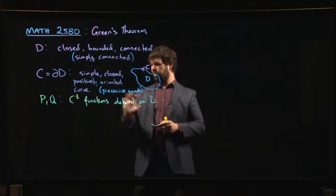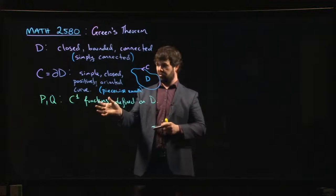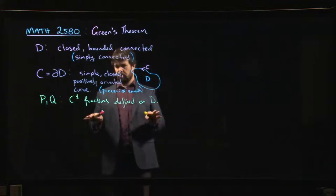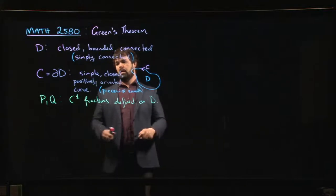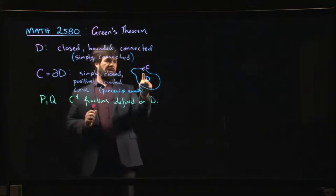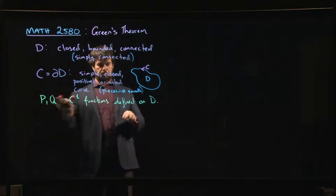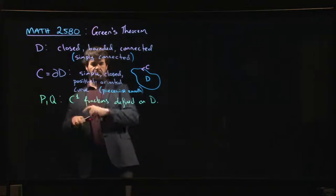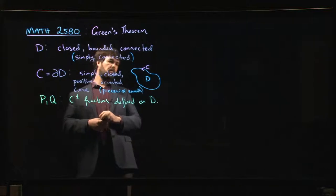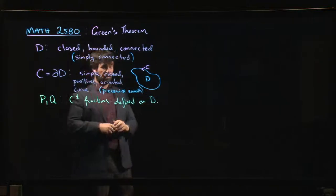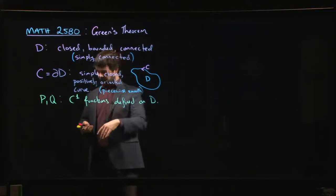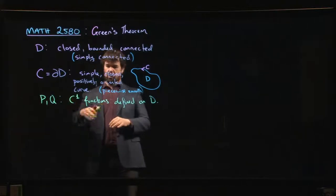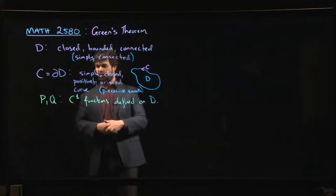If there are places in the region where these functions fail to be defined or fail to be differentiable, then Green's theorem is not going to hold, at least not in the form we're going to write it down. If there are points where these functions are not defined or not C1, we might be in a setting where the region we're looking at is not actually simply connected, and then we have to think about how to deal with that.